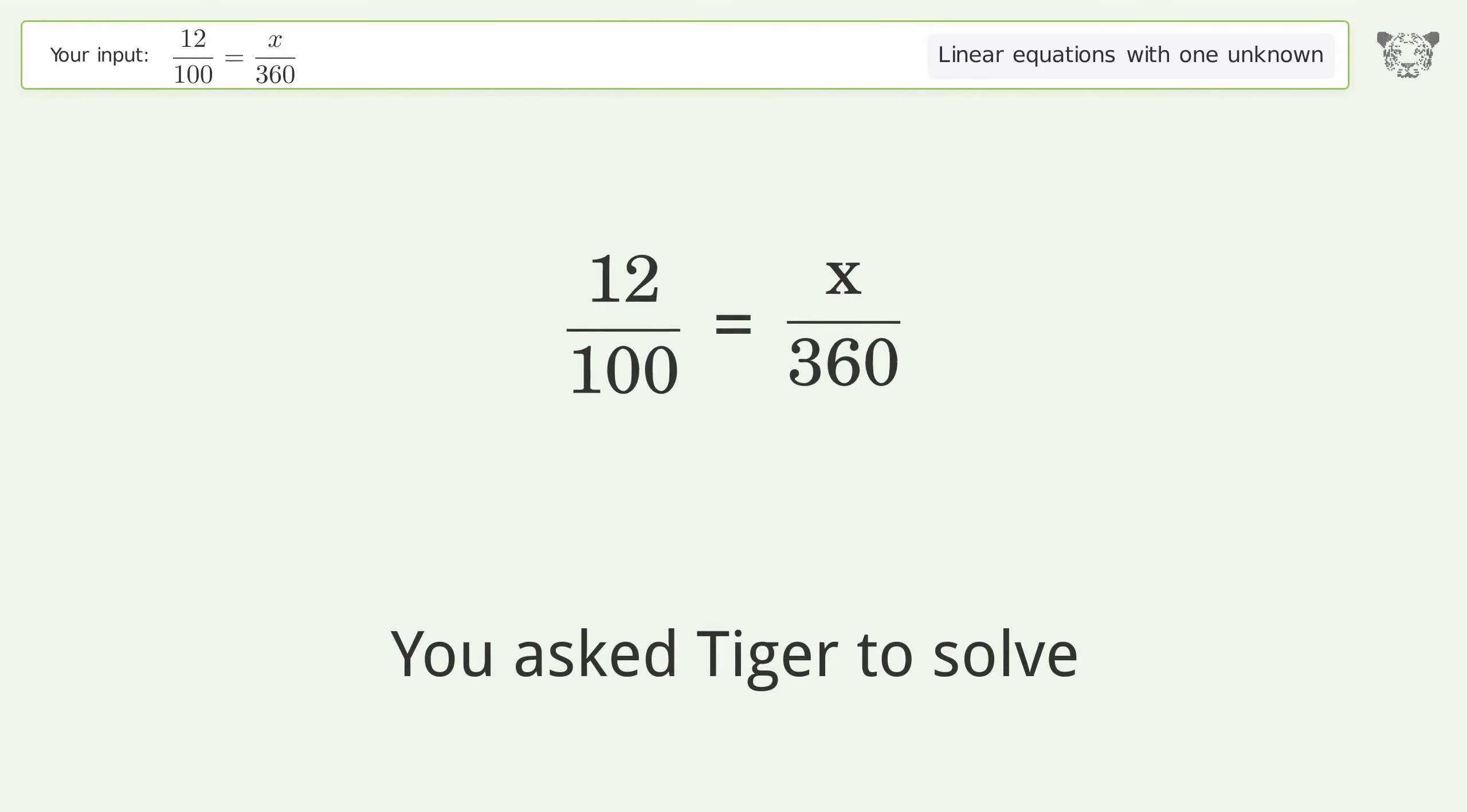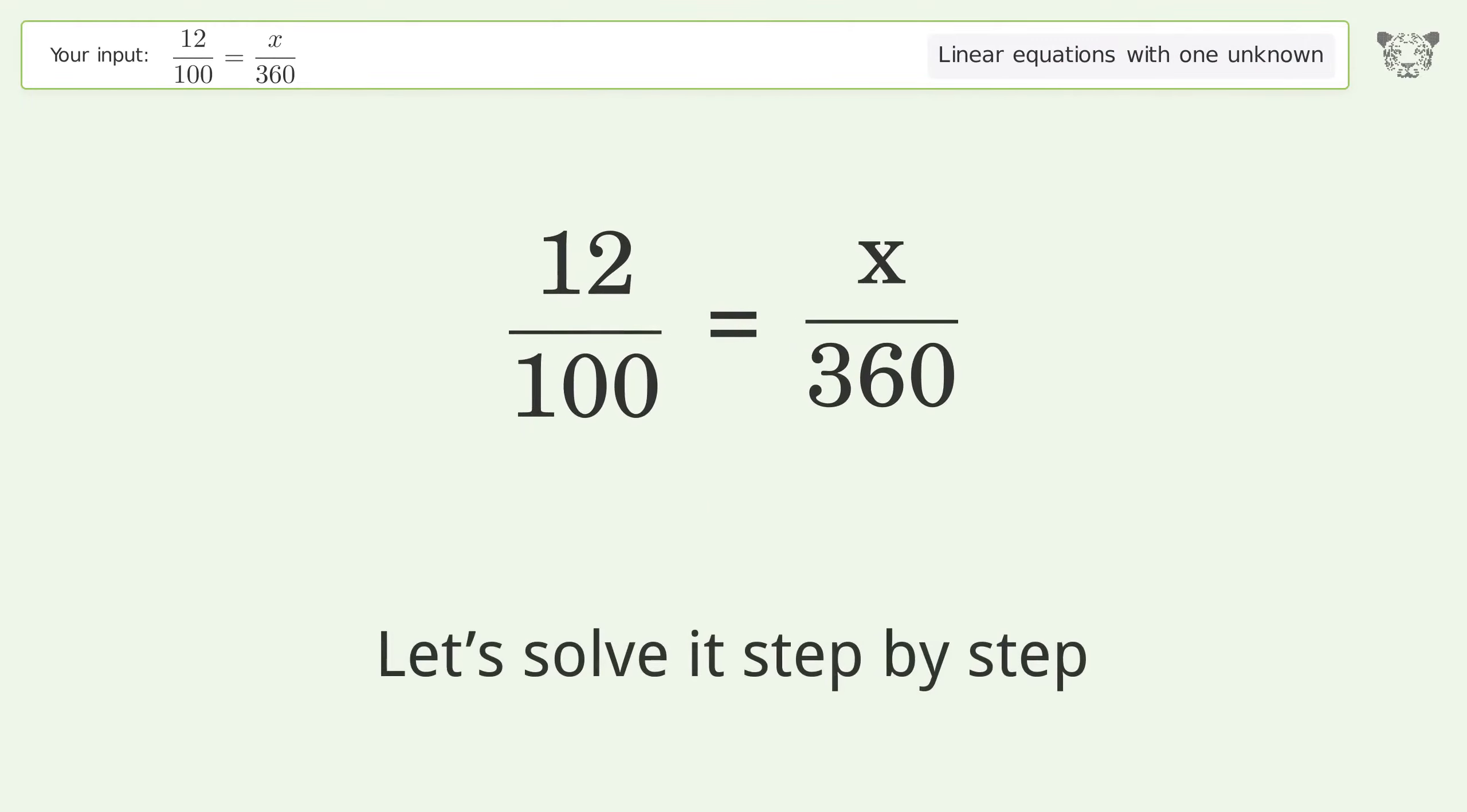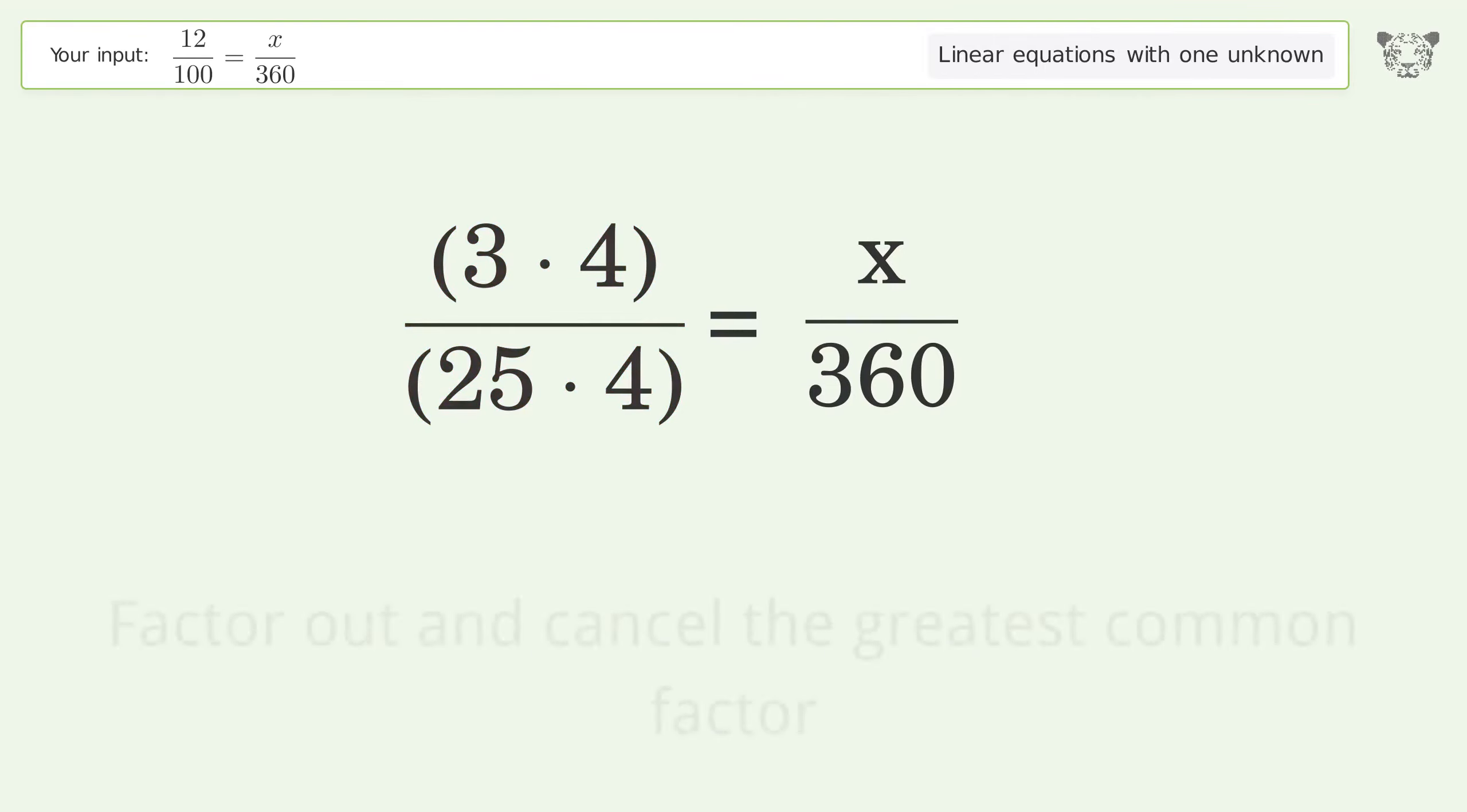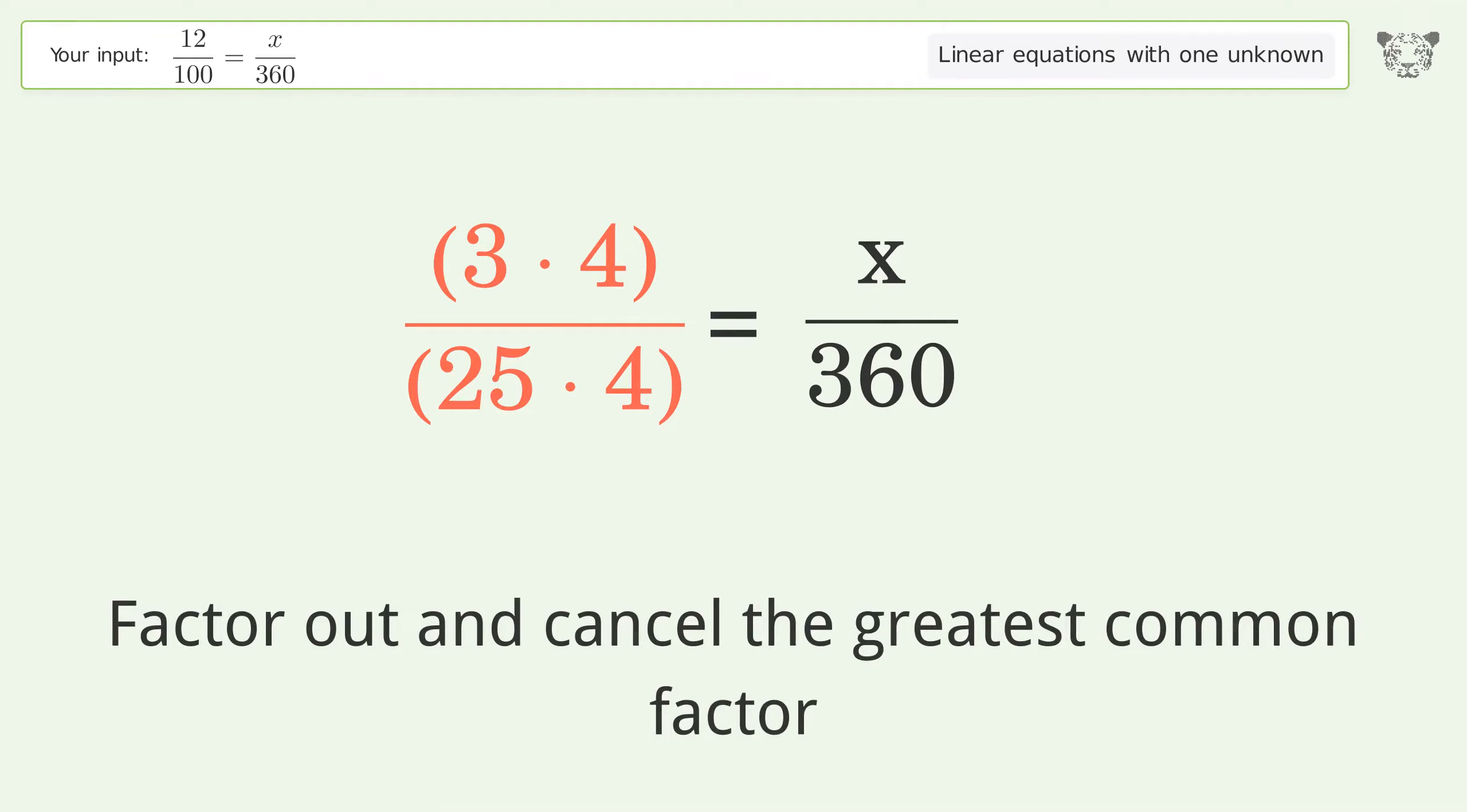You asked Tiger to solve this, which deals with linear equations with one unknown. The final result is x equals 216 over 5. Let's solve it step by step. Simplify the expression. Find the greatest common factor of the numerator and denominator. Factor out and cancel the greatest common factor.